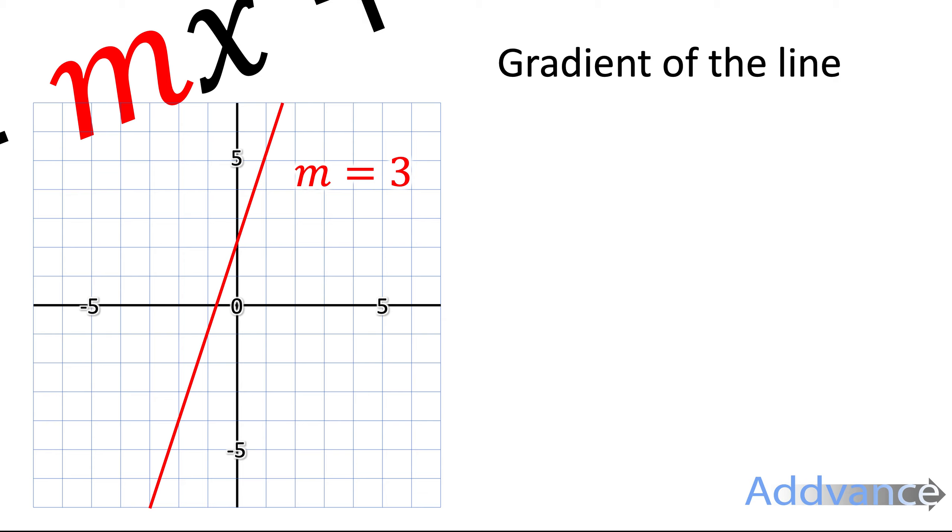Now let's see this in action. So let's look at the m first, the gradient of the line. Here we've got a line drawn, and here the gradient is 3. I've got another gradient here with a gradient of 1, a gradient of 0. A gradient of 0 means it's flat.